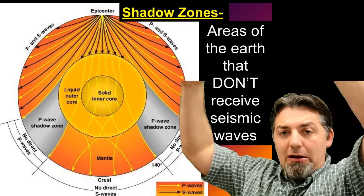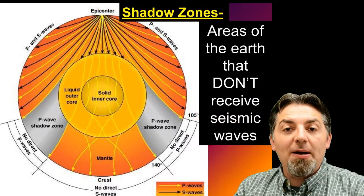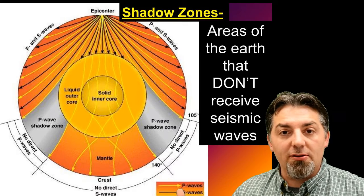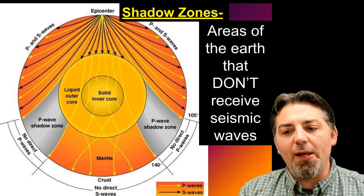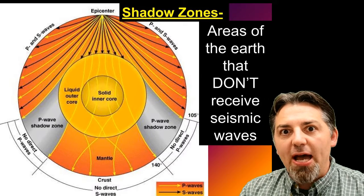So there are some places on Earth that don't receive seismic waves from an earthquake. Waves get released. Some of those waves are going to get absorbed by that liquid outer core. And so there are places on Earth that just won't feel those S waves. Those places that don't receive seismic waves, we call those shadow zones.